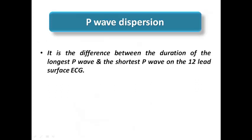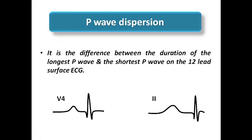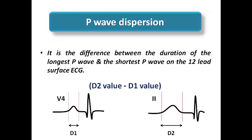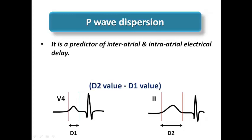P-wave dispersion is similar to QT dispersion: it measures the difference between the longest and shortest P-wave duration on the 12-lead surface ECG. The larger the P-wave dispersion, the higher the risk of atrial fibrillation, because a large difference between the longest and shortest P-wave is a predictor of inter-atrial and intra-atrial electrical delay — indicating atrial remodeling and increased risk of atrial fibrillation. To summarize: QT dispersion increases the risk of Torsades de Pointes, especially in long QT syndrome; P-wave dispersion increases the risk of atrial fibrillation.